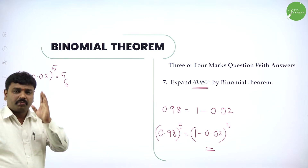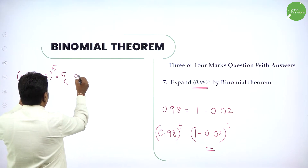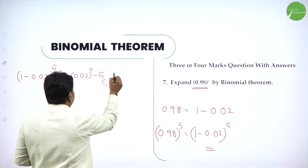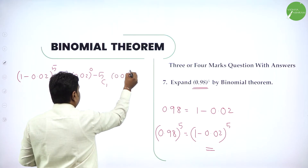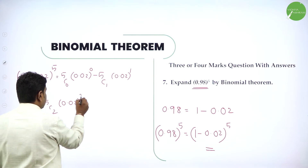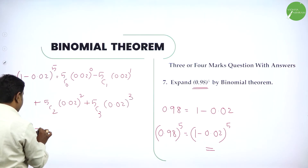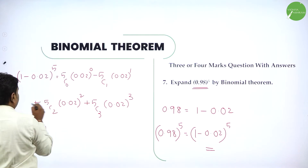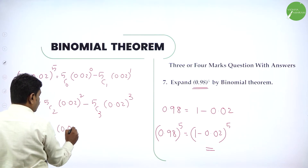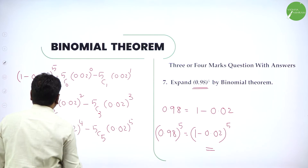When you have minus in between, you take the second term as positive — plus minus alternates. First term is positive, next term negative, like that. And 1 power anything is 1, so don't take 1. So it will be: 5C0 times 0.02 power 0, then minus 5C1 times 0.02 power 1, then plus 5C2 times 0.02 whole square. Then minus 5C3 times 0.02 whole cube. Plus 5C4 times 0.02 whole power 4. Then minus 5C5 times 0.02 power 5.